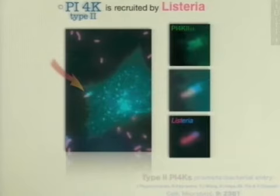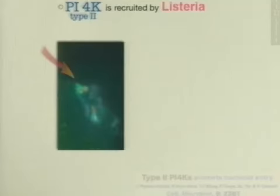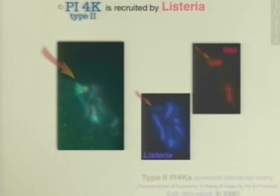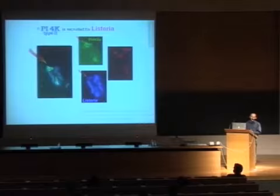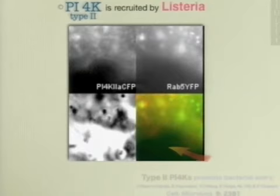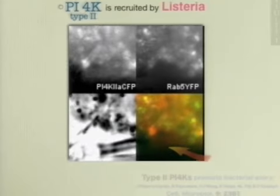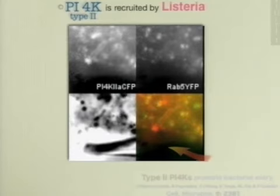With wild-type Listeria, we were also able to show that bacteria very early recruit the kinase. In this assay, we label the extracellular part of the bacteria with one fluorochrome and the intracellular part with another, and we observe that the part of the bacteria which is inside the cell is already able to trigger the recruitment of the kinase. This recruitment is dependent on the interaction of the bacteria with the receptor MET, since only bacteria which are able to interact with this receptor are able to reorganize the kinase at the site of entry. By live cell imaging, we observed that the recruitment is very fast. We have in red the recruitment of the type 2 PI4 kinase, and afterwards the recruitment of RAB5, which is a marker of early endosomes, indicating that the kinase is recruited during the very early stages of internalization.